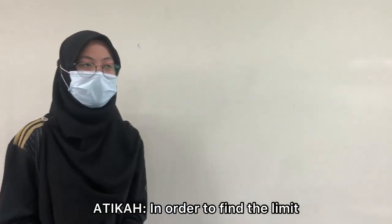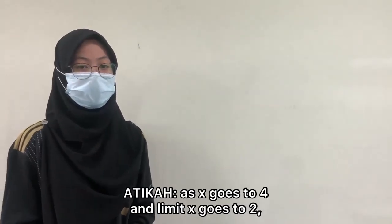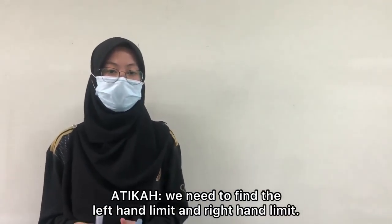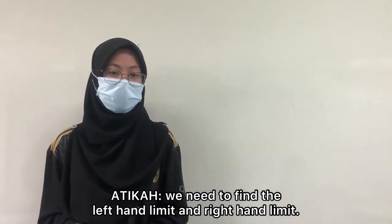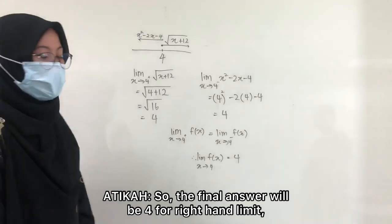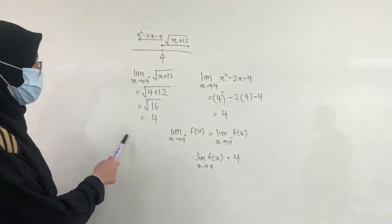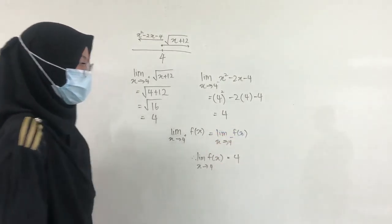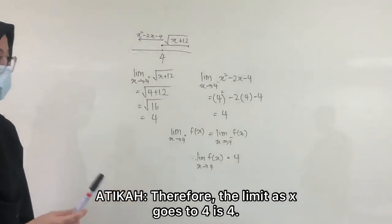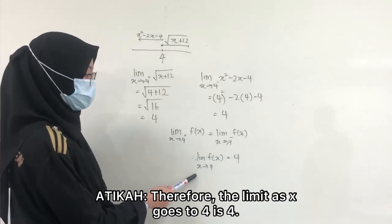In order to find the limit at x equals 4 and x equals 2, we need to find the left-hand limit and right-hand limit. What is the first step? I think we need to do the number line. The final answer will be 4 for the right-hand limit and also left-hand limit. And therefore, the limit as x goes to 4 is 4.